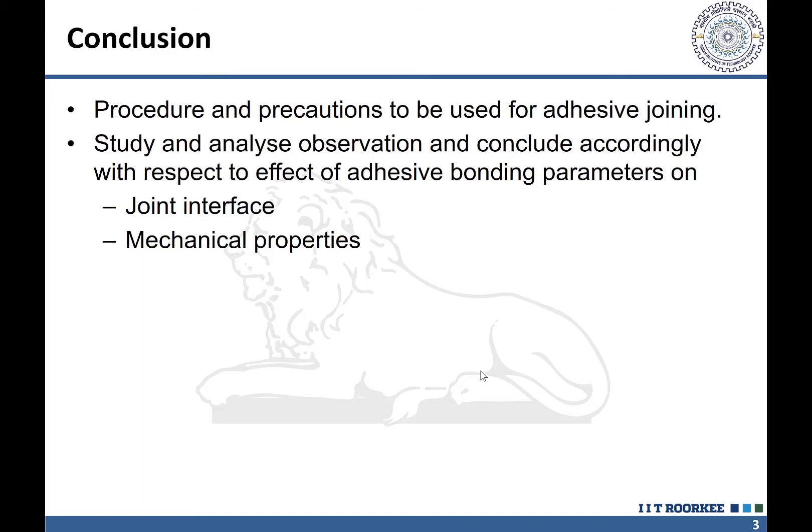As a concluding part, we have seen what is the procedure for developing adhesive joints and what precautions we should take. Once the data has been generated for the effect of the various bonding parameters on the joint performance, we can relate it with the joint interface characteristics. Thank you for your attention.